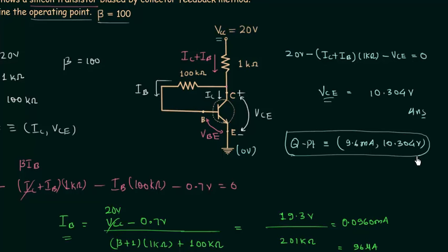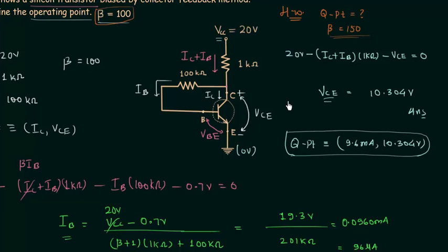This is a very easy numerical problem. Now we will move to the homework problem. You have to find out the operating point when beta is equal to 150. Instead of beta equal to 100, we have beta equal to 150, and all the other parameters remain the same. Calculate the operating point for beta equal to 150 and post your answer in the comment section.